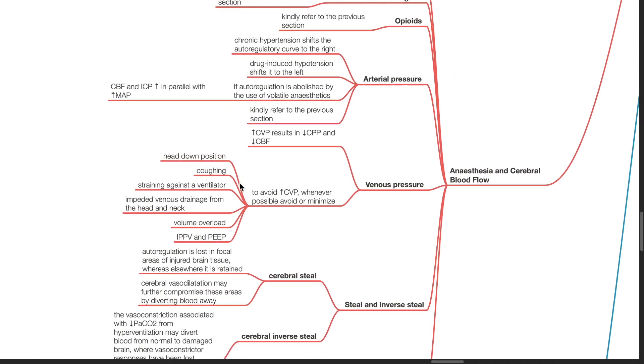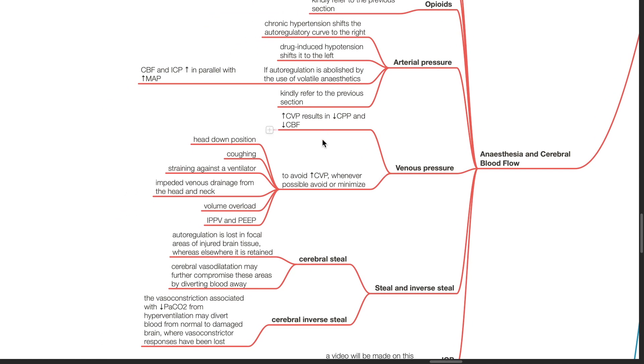Venous pressure. Increase in CVP results in decreased CPP and decreased cerebral blood flow. To avoid increases in central venous pressure, whenever possible, avoid or minimize head down position, coughing, straining against a ventilator, impeded venous drainage from the head and neck, volume overload, IPPV and PEEP in anesthetized patients.